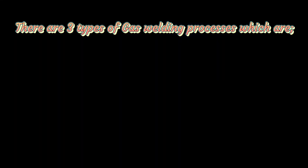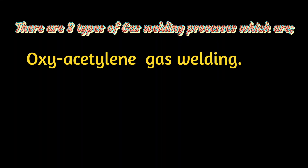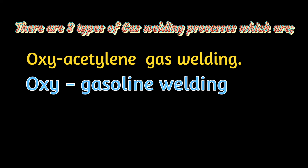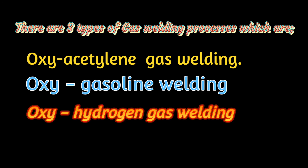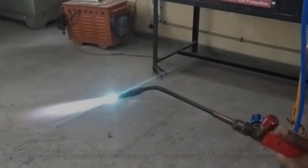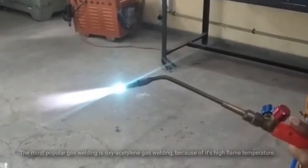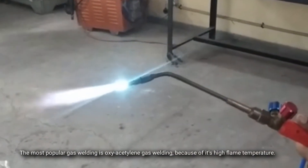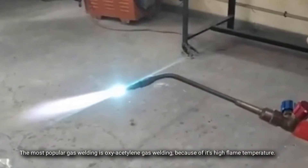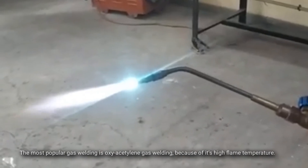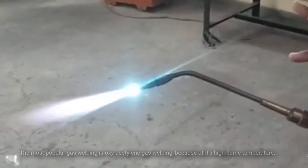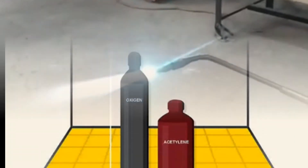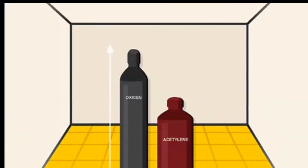There are three types of gas welding process: one, oxy-acetylene gas welding; two, oxy-gasoline welding; three, oxy-hydrogen gas welding. The most popular is oxy-acetylene gas welding because of its high flame temperature. We shall be discussing oxy-acetylene gas welding.